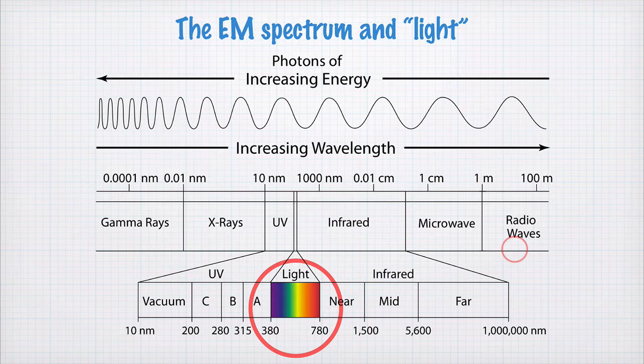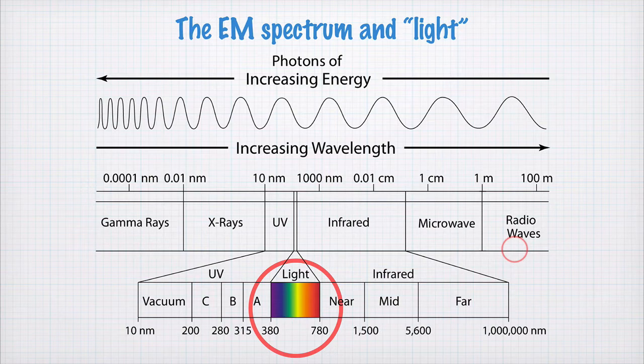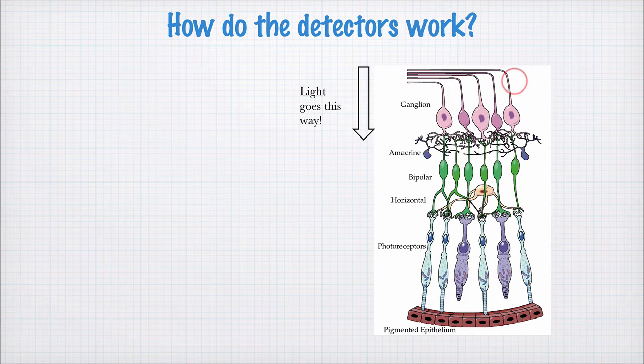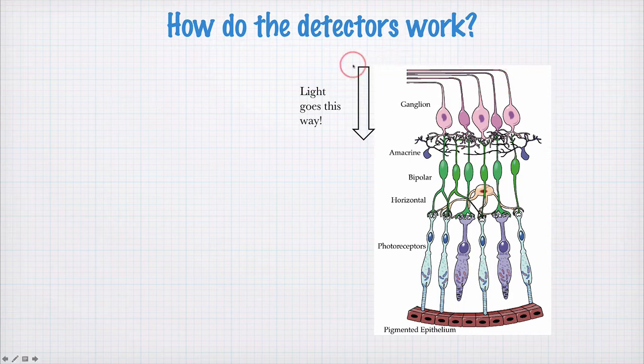But first, what is the part of the eye that actually senses the light? How do we take a photon of light, or a bit of light wave, and convert that to something the brain can understand? This image here shows a cross-section of the detector part of the human eye. So when I say detector, I mean the part that takes the light and turns it into a signal that can travel to the brain. So the light comes in from the top and passes through these pink cells here. And these are actually nerve cells that run to the brain. So these are the cells that eventually carry the signal to the brain.